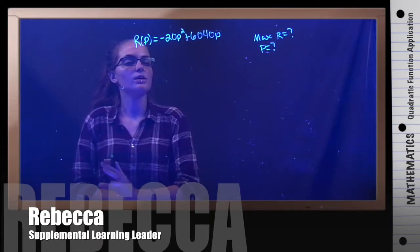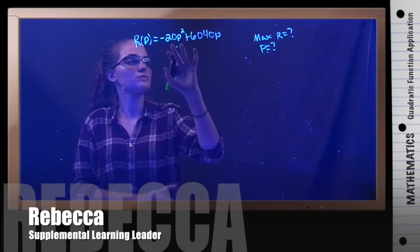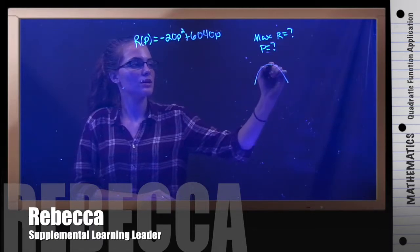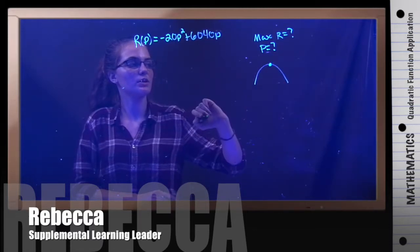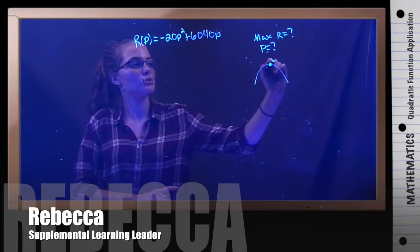We have to think about this logically. When we're talking about parabolas, anytime you have a maximum, it's always right there. What else is this point called? It's also called the vertex.